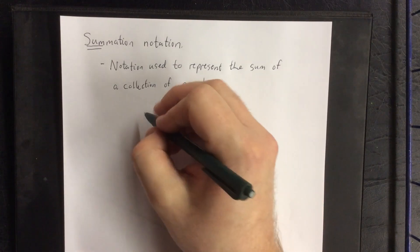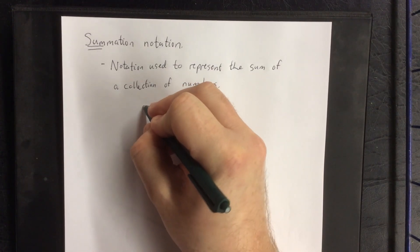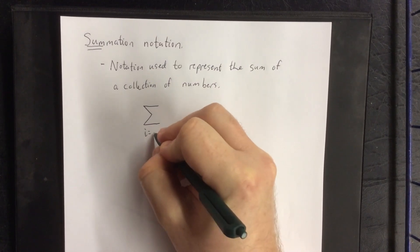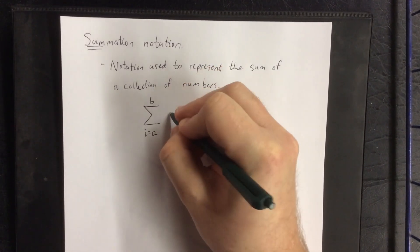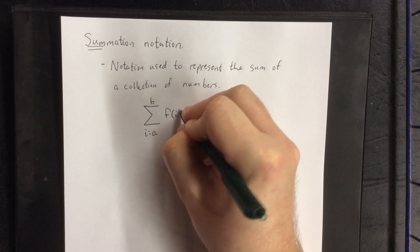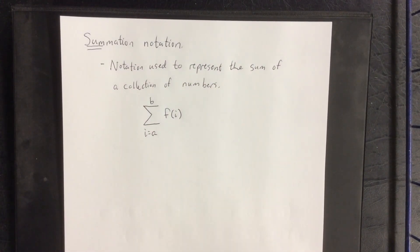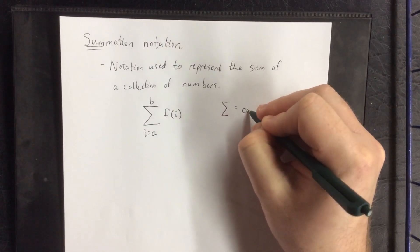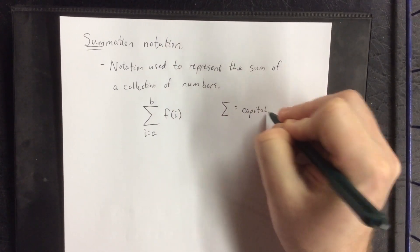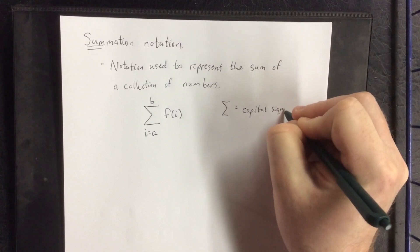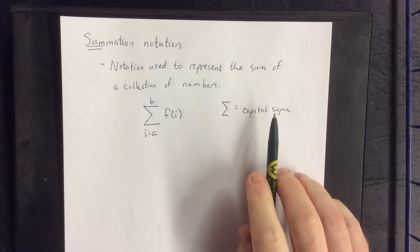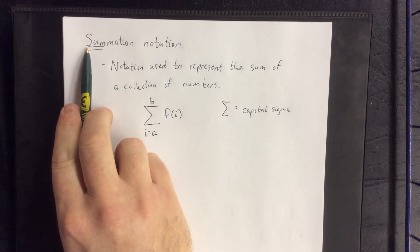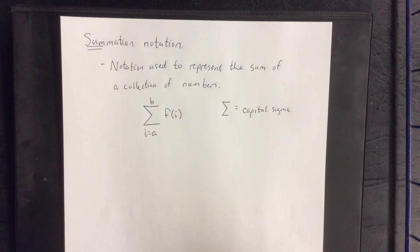Now, the most general version of summation notation that we can use is going to look like this. So first off, the symbol that you see here is known as the capital sigma. Sigma is a Greek letter, roughly translated it would be S, and S is used for summation. So that's why we go with the capital S.